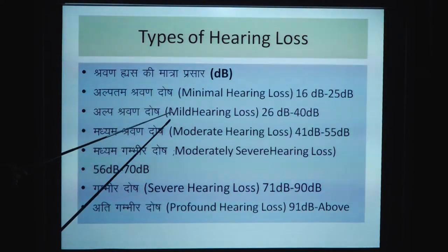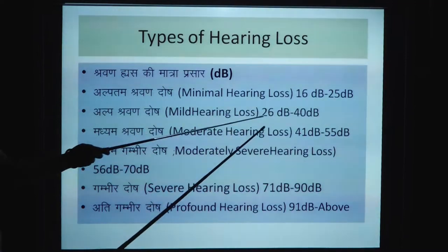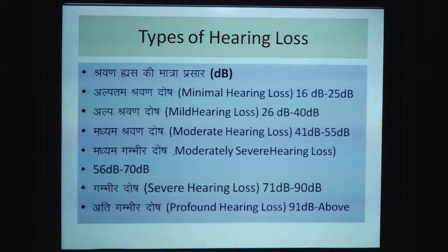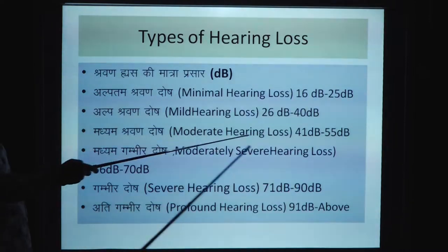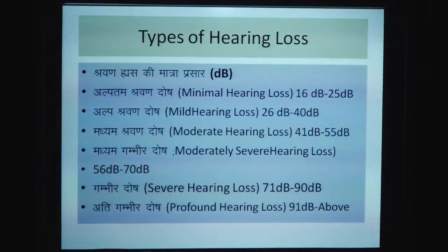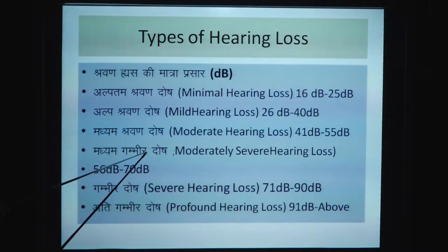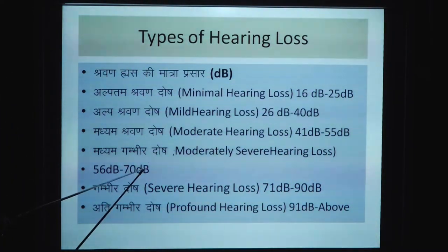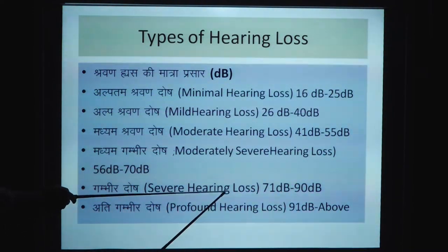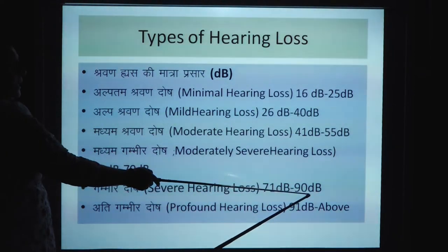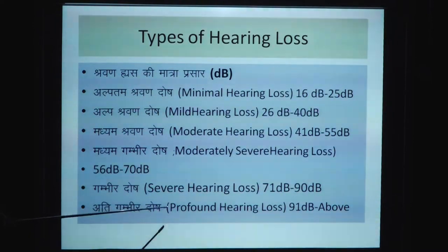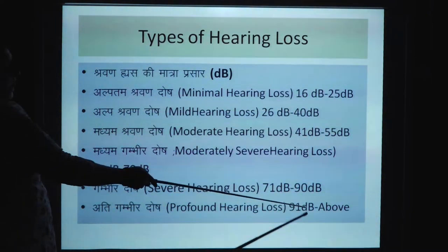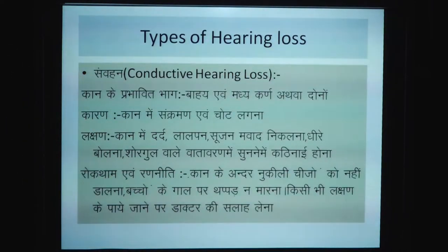Degrees of hearing loss: Mild hearing loss जिसे अल्प श्रवण हास कहते हैं — यह 26 decibel से 40 decibel तक होता है। इसके बाद moderate hearing loss होता है। और ati-gambhir dous यानि profound hearing loss जिसे profound hearing loss कहते हैं — यह 91 decibel से ऊपर हो सकता है।